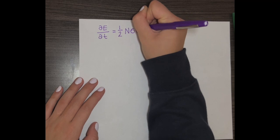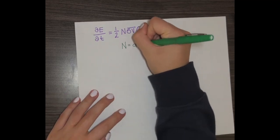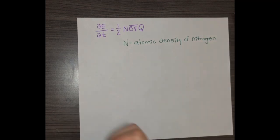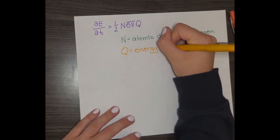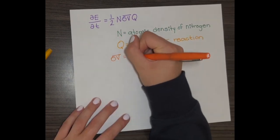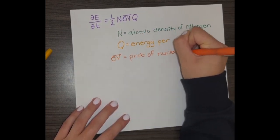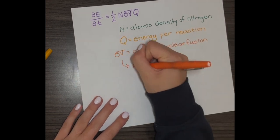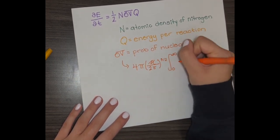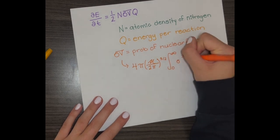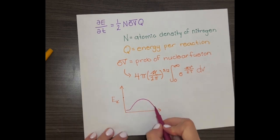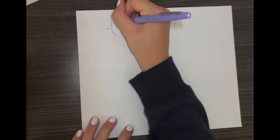What they did was take the partial derivative of energy with respect to time — essentially a rate of change of energy produced over a period of time. They incorporated different variables including the atomic density of nitrogen, the energy per reaction, and the probability of fission, shown as an average with a bar. To calculate this, they used the Maxwell-Boltzmann distribution, which maps kinetic energy over a given period of time — essentially calculating the area under the curve.